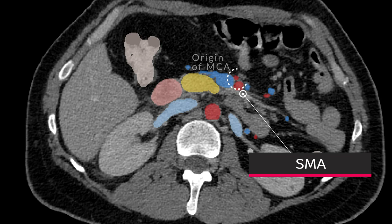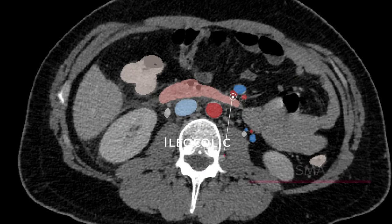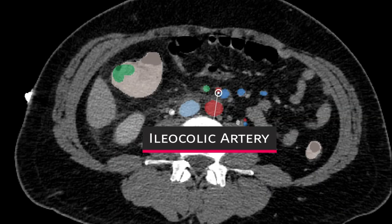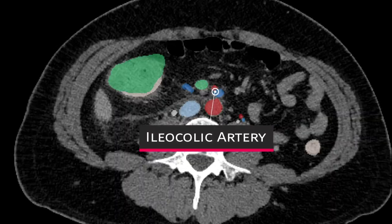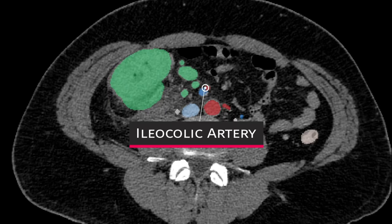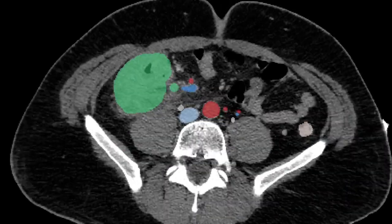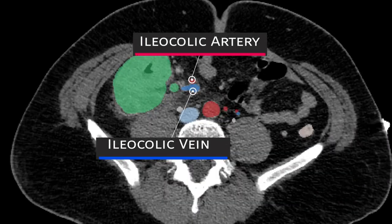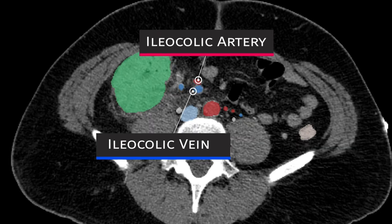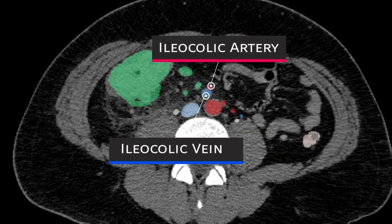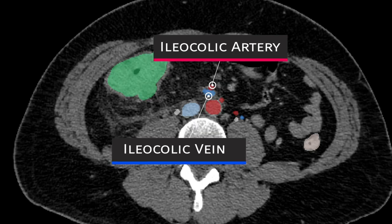The SMA can be followed further distally to identify the origin of the ileocolic artery, seen here passing dorsally to the SMV. This can be traced as it passes inferolaterally to the right lateral aspect, towards the cecum and proximal ascending colon. The ileocolic vein can then be identified as the vessel accompanying the artery and traced back to its insertion into the SMV.